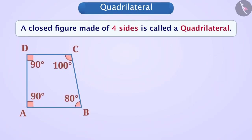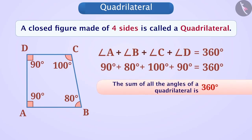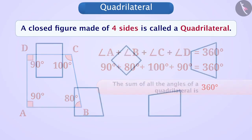If we take any quadrilateral and add the measures of its angles, then the answer will be 360 degrees. This is true for each quadrilateral. Therefore, we can say that the sum of all angles of a quadrilateral is 360 degrees. This is an important property of a quadrilateral.